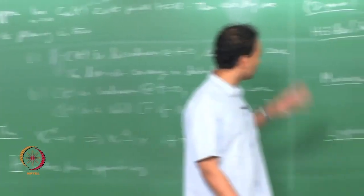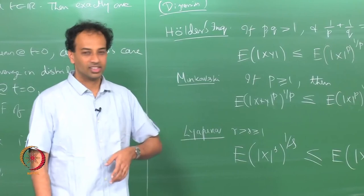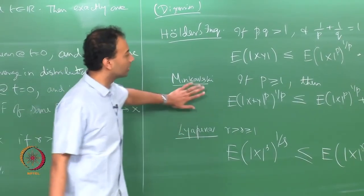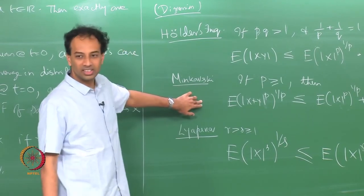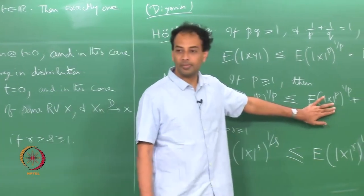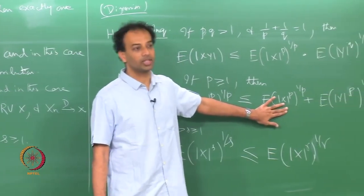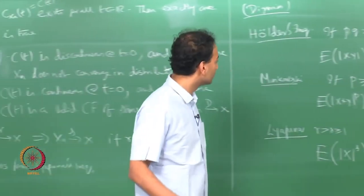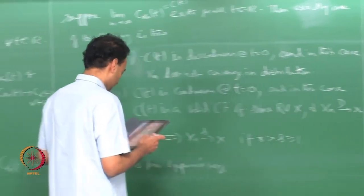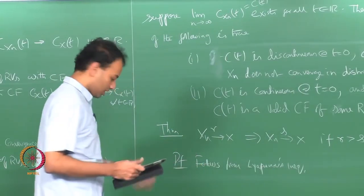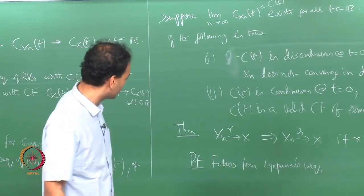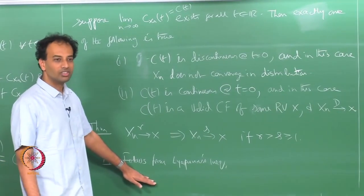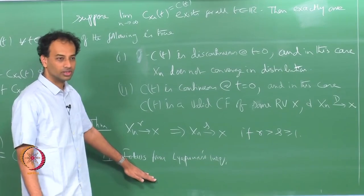That was just a digression. You may encounter these inequalities — they are useful to know. In particular, Minkowski's inequality proves that (E[|X|^P])^{1/P} is a norm in the L^P space. That completes what I had to say generally about convergence of random variables.